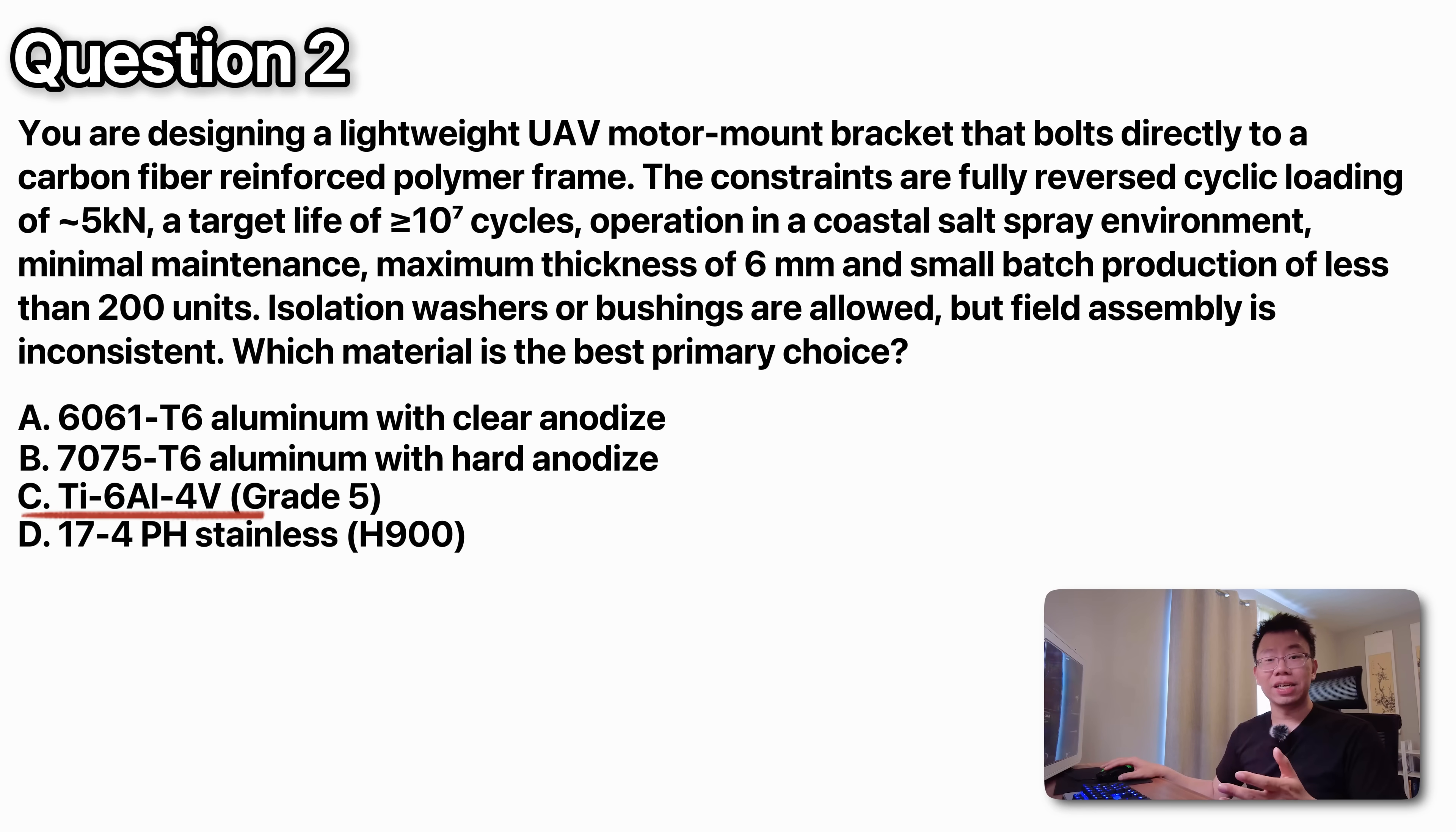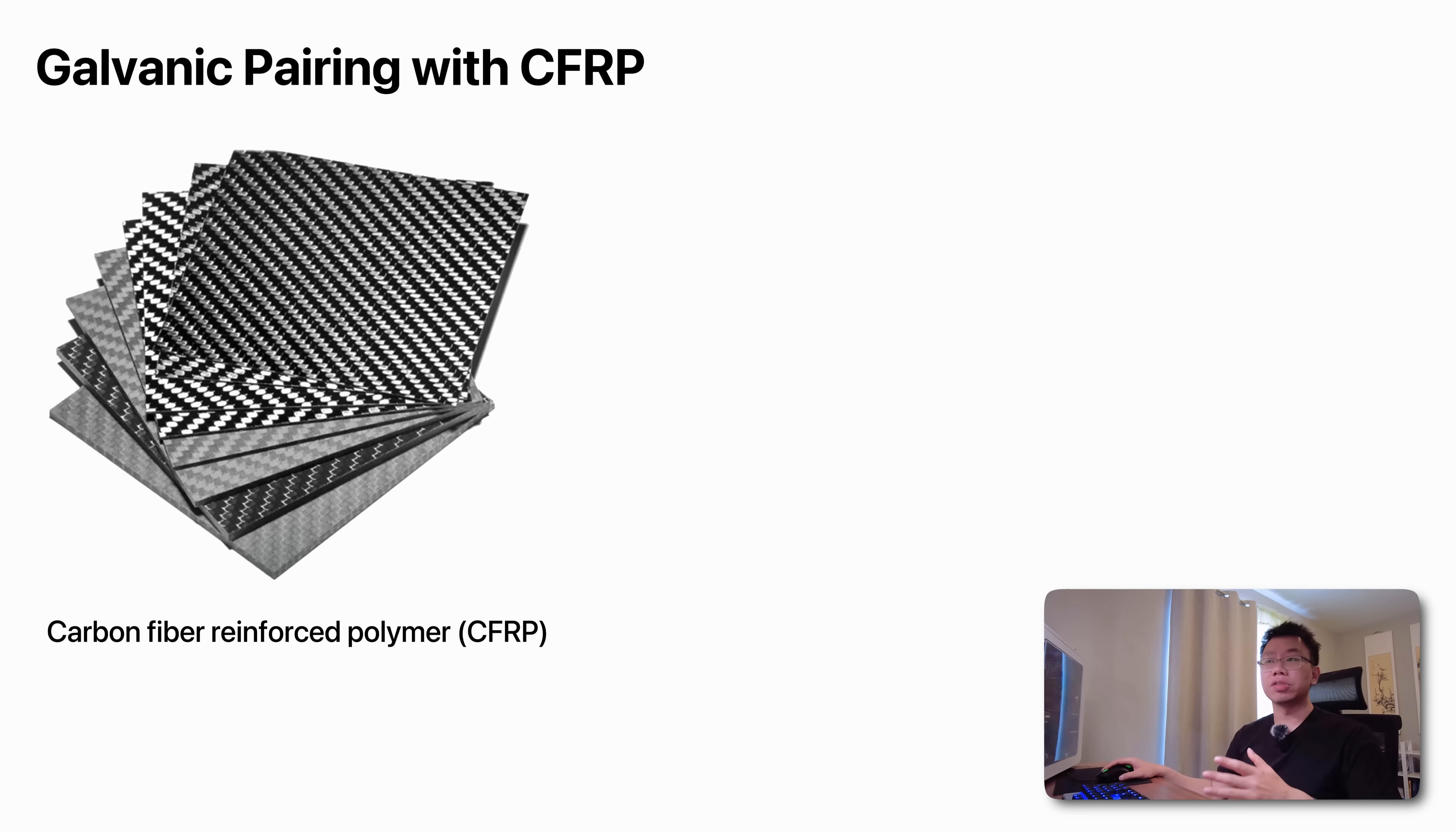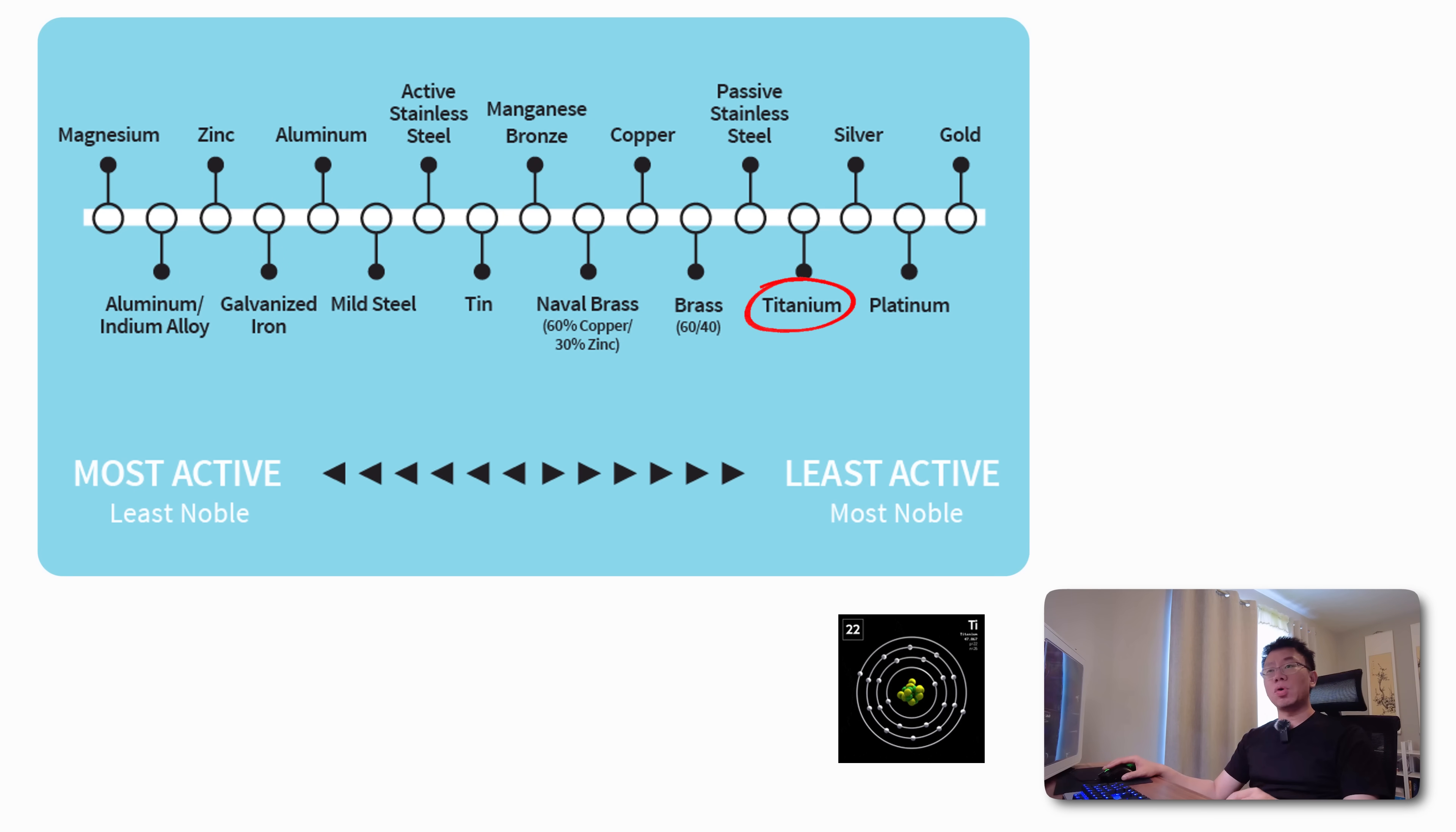The best choice here is C titanium grade 5 alloy. So in a system containing multiple dissimilar materials, especially in direct physical contact with each other, I like to first consider any chemical reactions that might occur. Carbon fiber reinforced polymer behaves as a noble electrode in a wet or salt environment due to its carbon network. Aluminum paired with carbon fiber reinforced polymer will galvanically corrode rapidly if the anodized coating is damaged, even with isolation washers. Titanium on the other hand forms a stable oxide layer and is galvanically compatible with carbon fiber, which eliminates this corrosion risk.